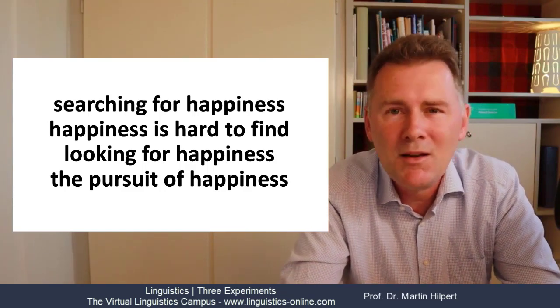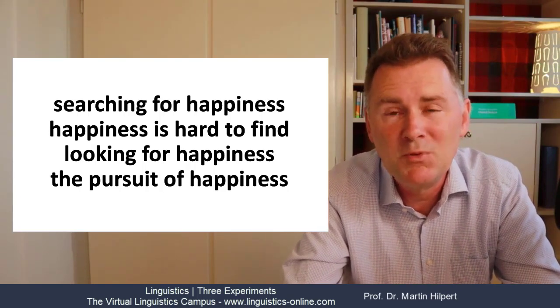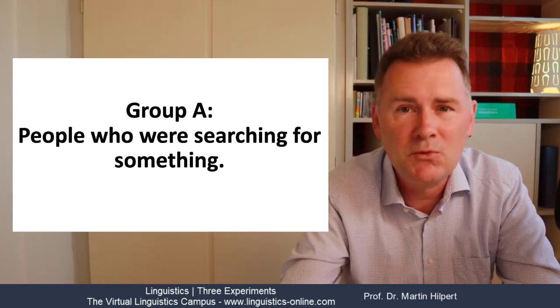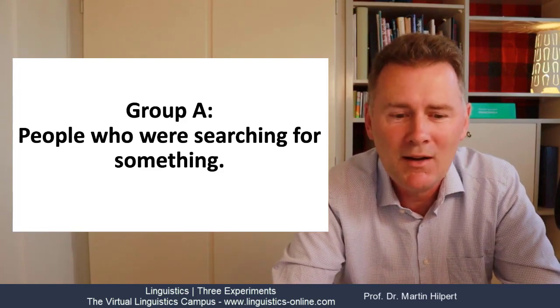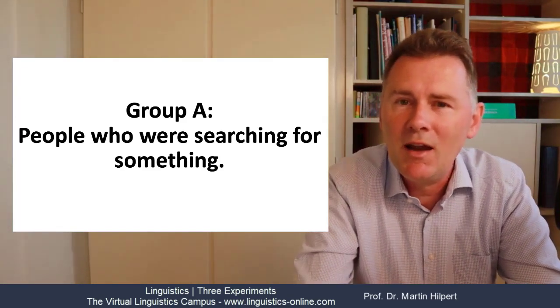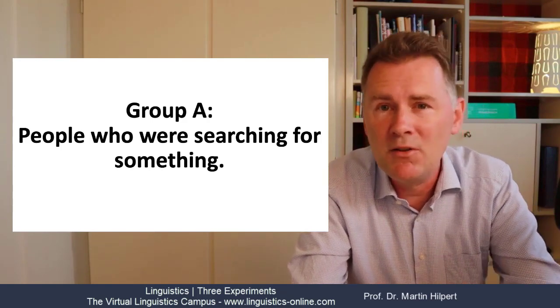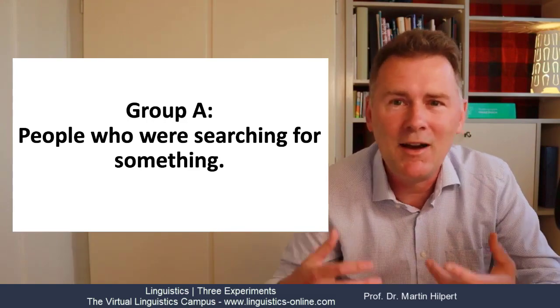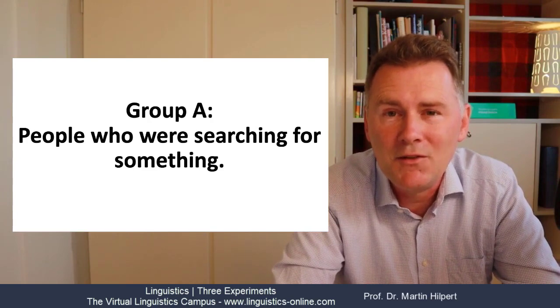Now with this in mind the experimenters showed the picture of the person to three different groups of people. Group A were people in libraries or grocery stores. They were looking for the right book or the right food item that they wanted to buy. So in essence they were people who were searching for something and the hypothesis was that these people would be more likely to respond to the picture by saying that person is experiencing happiness because the idea of searching for something was already active in their minds.